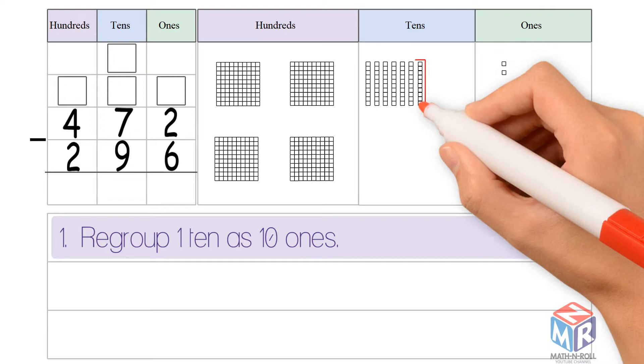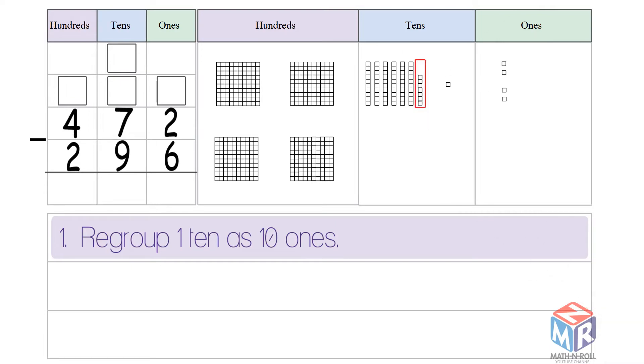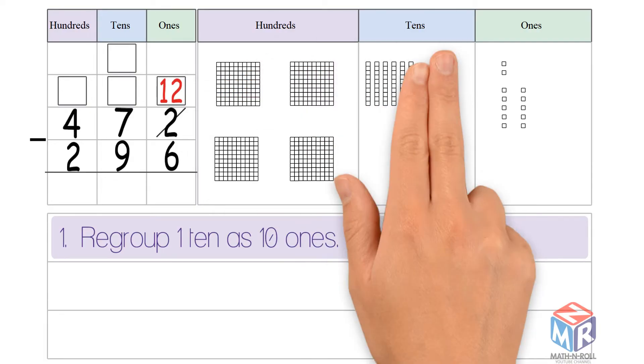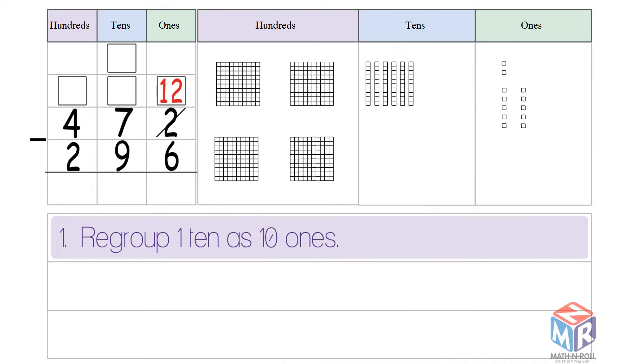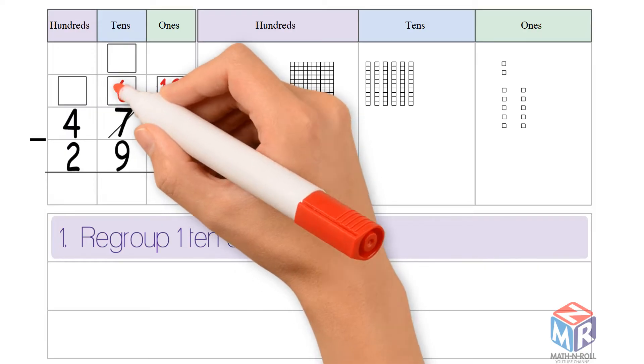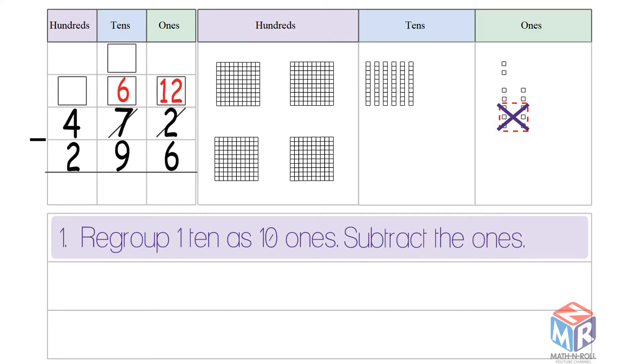So we have to regroup 1 ten as 10 ones. Now we have 12 ones and 6 tens. Now you subtract the ones. 12 minus 6 is equal to 6.